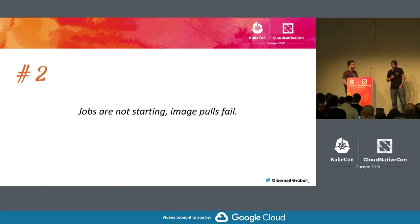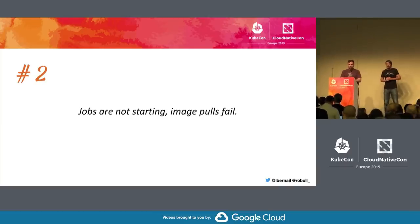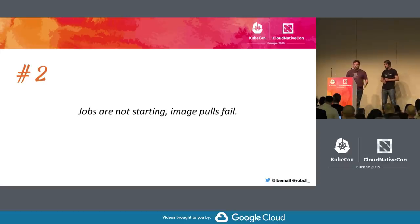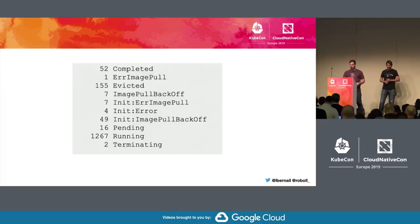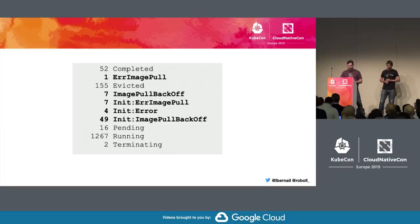Moving on from DNS. Users reported their jobs weren't starting, and we saw evidence of image pull issues. Looking at the state of all pods on the cluster, there were quite a lot of pods in error state related to image pulls. It wasn't affecting running applications, but something was clearly wrong. Metrics showed a drastic increase in image pulls sustained over time, then another drastic increase.